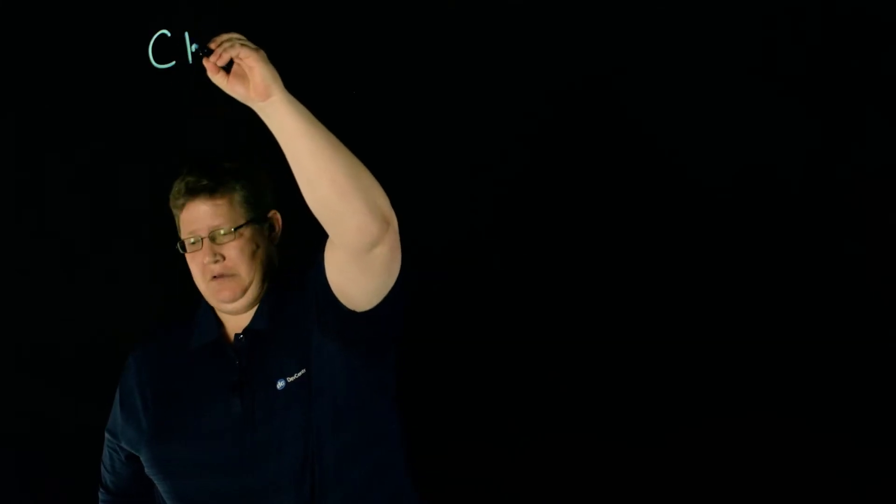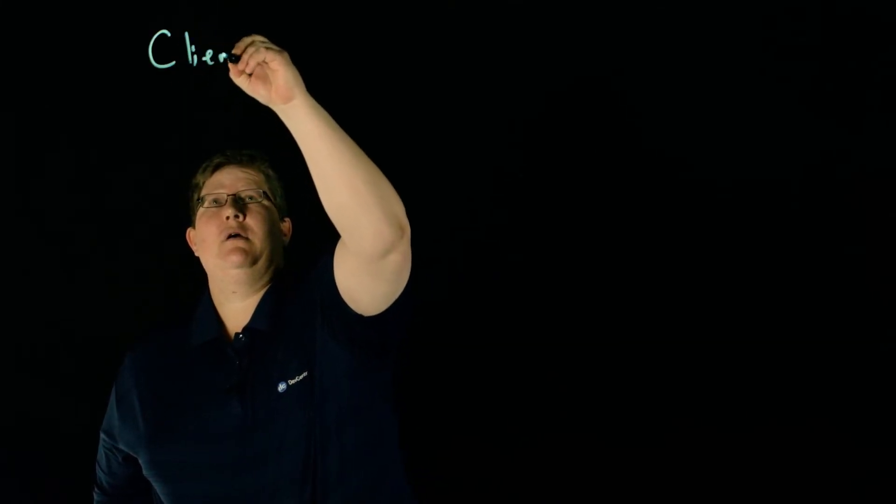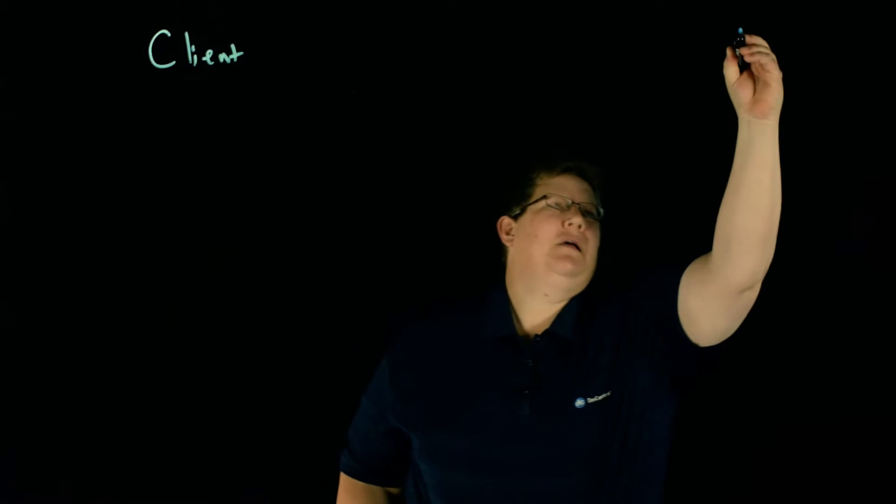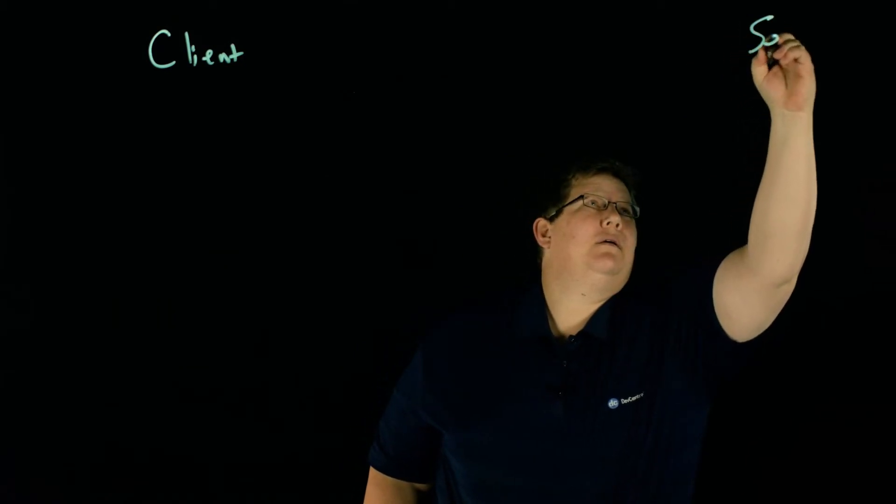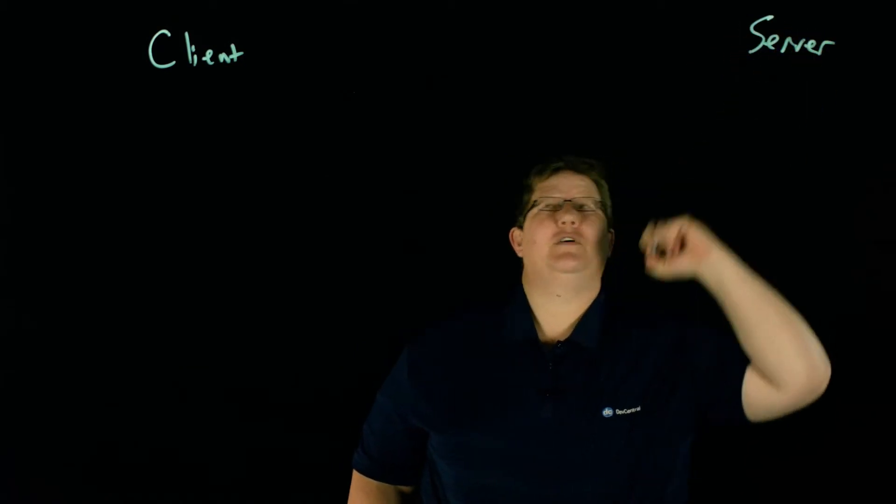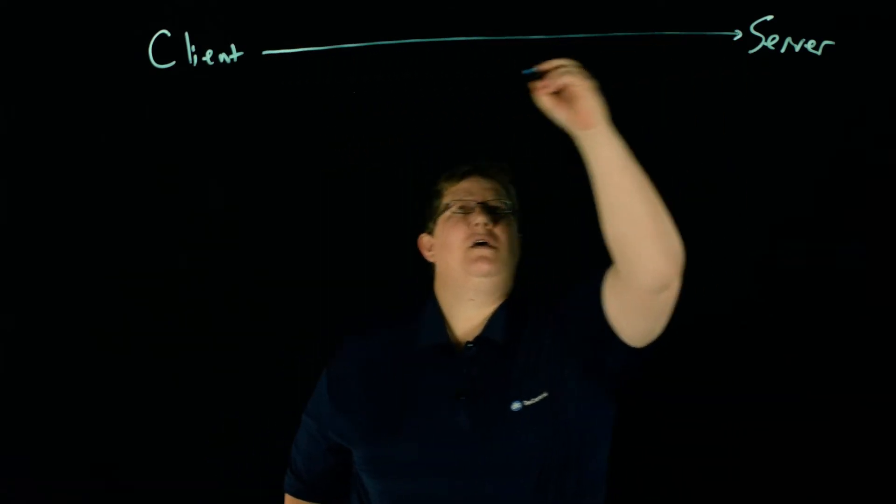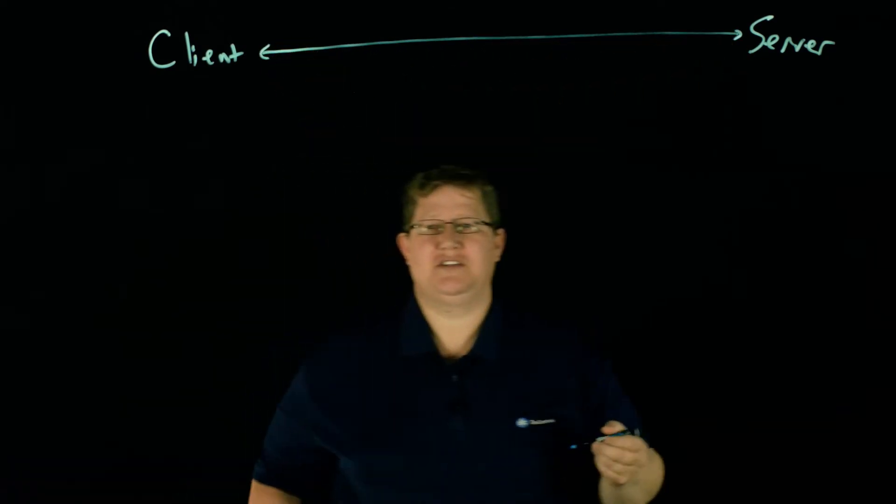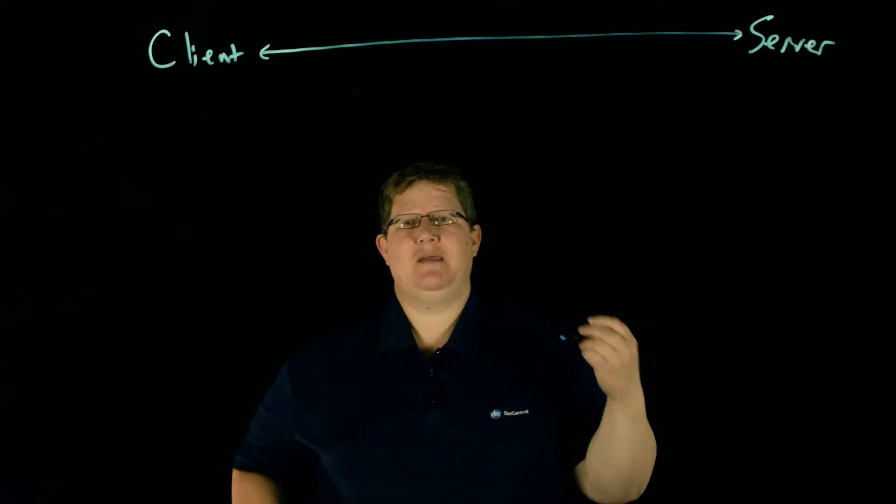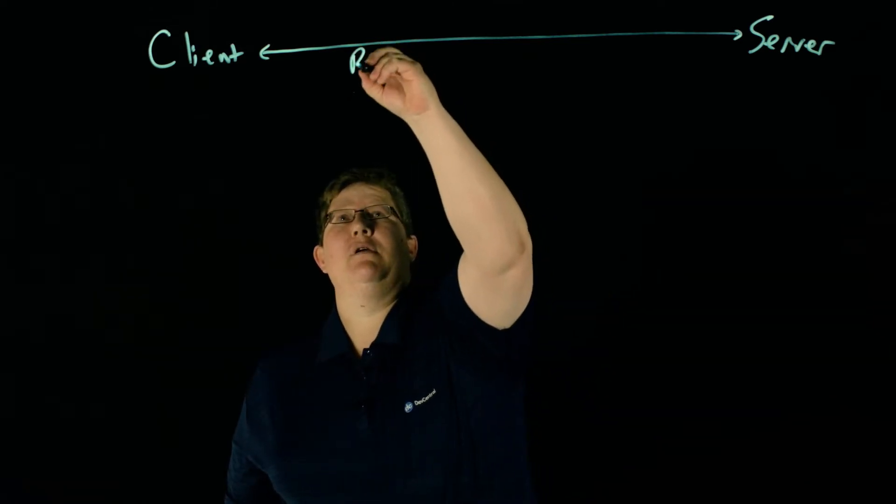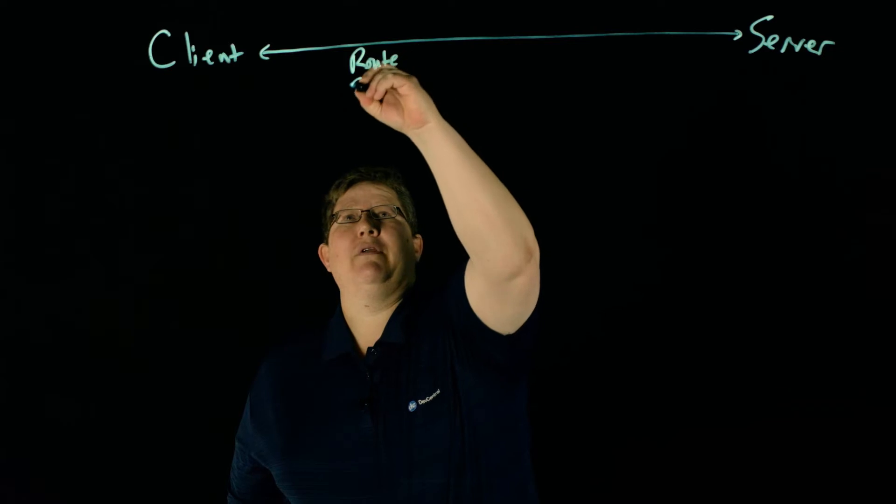So if you look at traditional iRules and policies, you have a client and a server, and your traffic comes from client to server across the data plane of the BIG-IP.